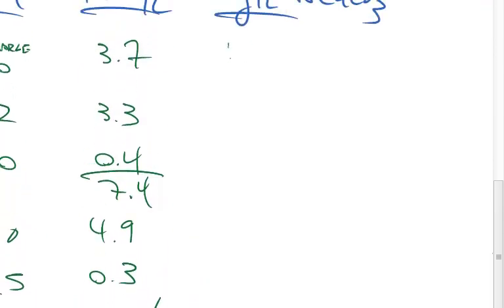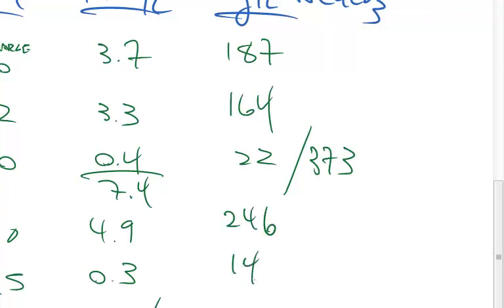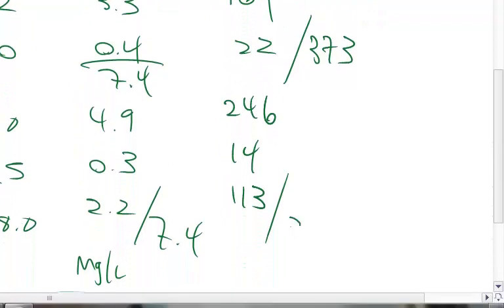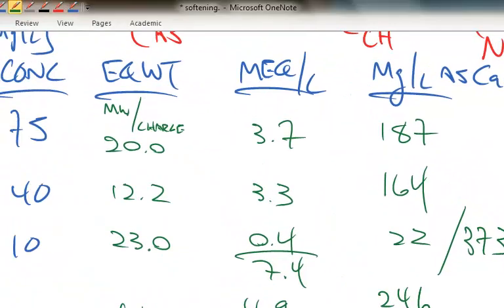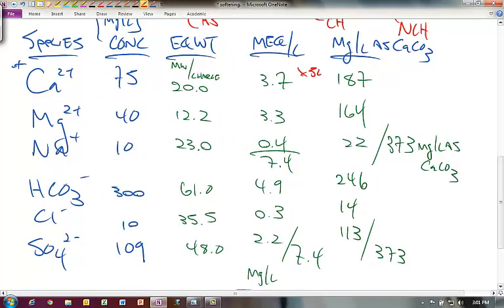We've done those calculations before. We should get 187, 164, and 22. Sum those up and we get 373. For the anions we get 246, 14, and 113. Sum those up and we get the same 373 milligrams per liter as CaCO₃ in solution. This is just times 50 to get this value to convert it from milliequivalents per liter to as CaCO₃. So we've got these totals now.